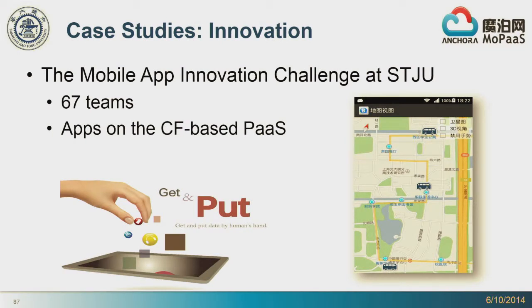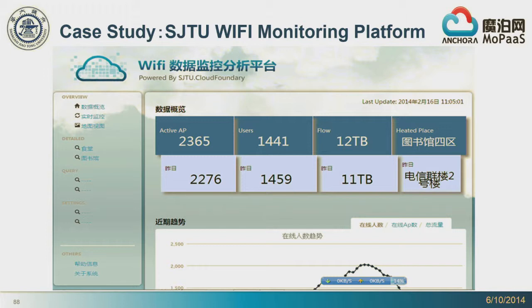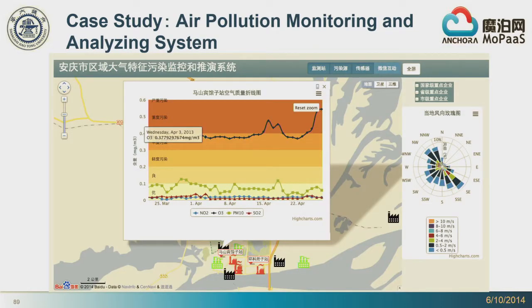I would like to share three case studies. The first one is the university used this platform as an innovation platform — they hosted their first mobile app innovation challenge last year at the university, with about 57 teams participating, and all the apps were deployed on the community PaaS. The second one is the NIC, the network and information center, built their Wi-Fi network monitoring platform, also hosted on this PaaS. The third one is a university research team in the environmental engineering department that provides an air pollution monitoring and analyzing system, also deployed on the university community PaaS.